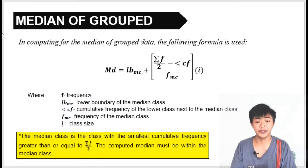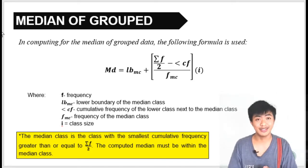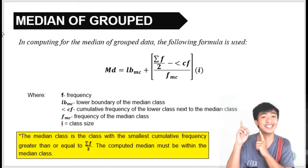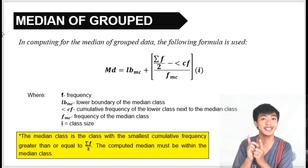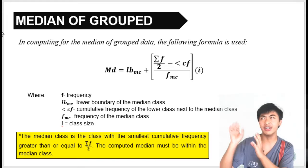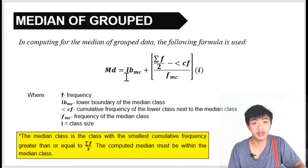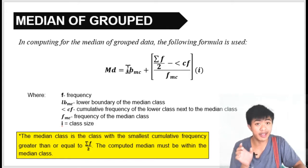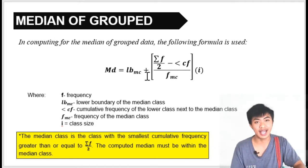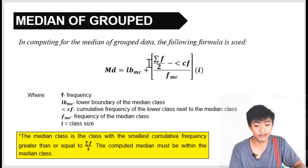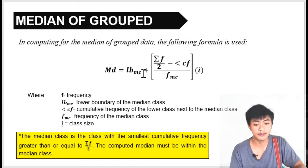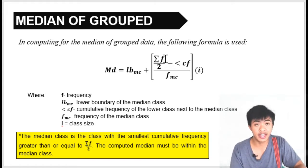In computing for the median of grouped data, the following formula is used. It looks complicated, but I'll be helping you break down the components of the formula. The median is equal to LB subscript MC — where MC is the median class and LB is the lower boundary — so this is the lower boundary of the median class. Plus, we have here summation of F over 2.